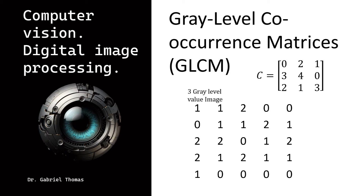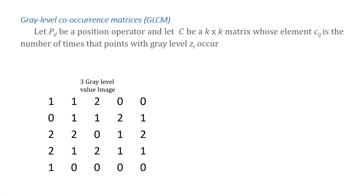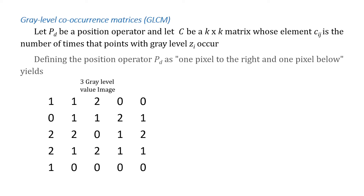A gray level co-occurrence matrix characterizes the texture of an image by calculating how often pairs of pixels with specific values and in a specified spatial relationship occur in the image. It provides a statistical representation of the spatial dependencies between pixel values. By defining a pixel operator, it captures information about how neighboring pixels interact in terms of their gray level values.